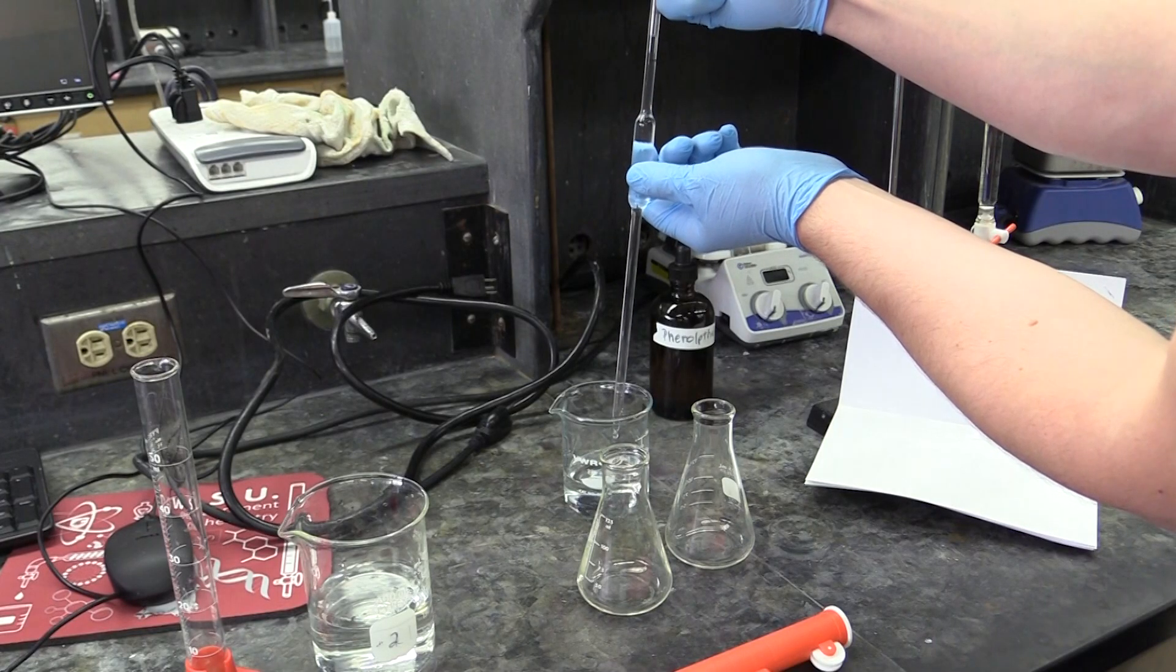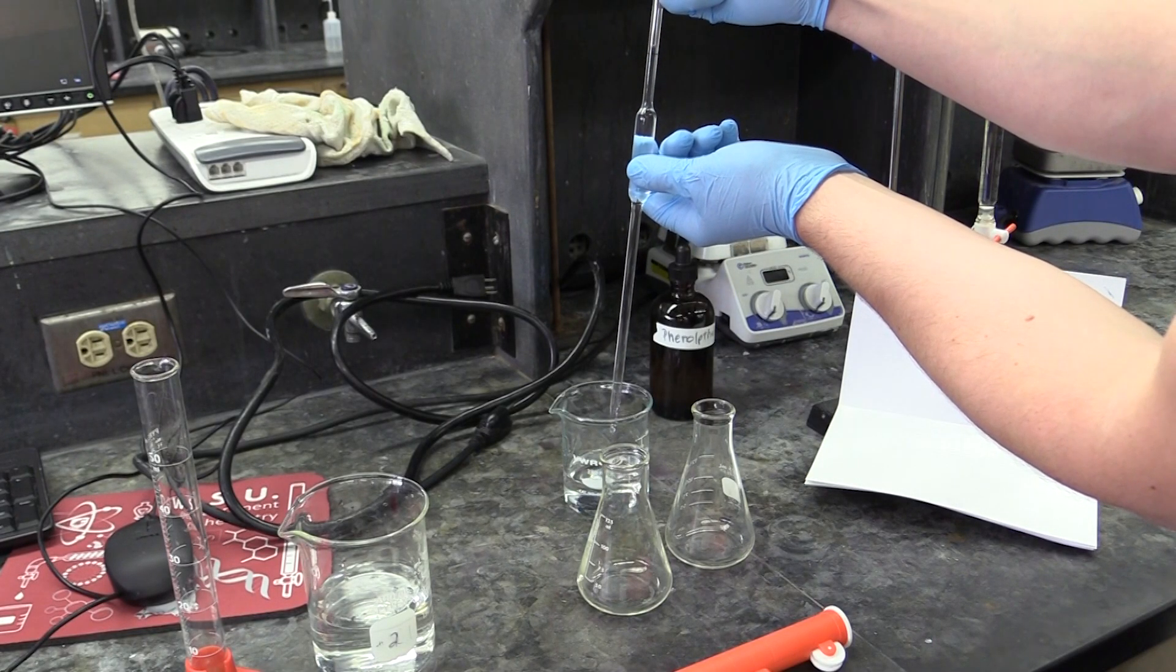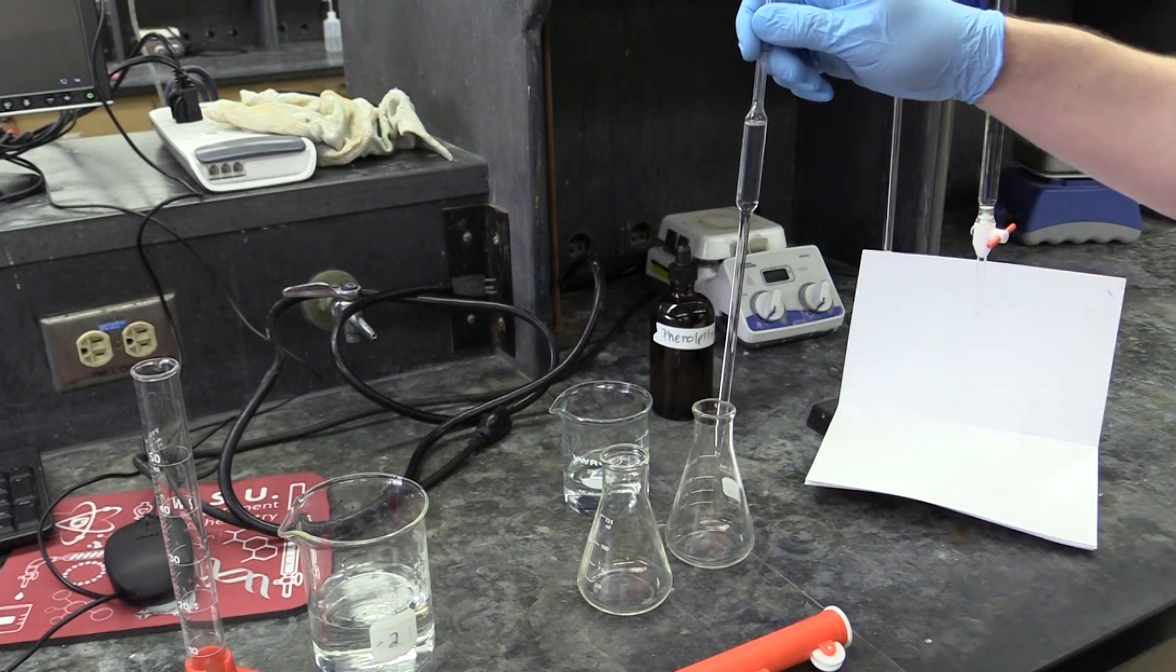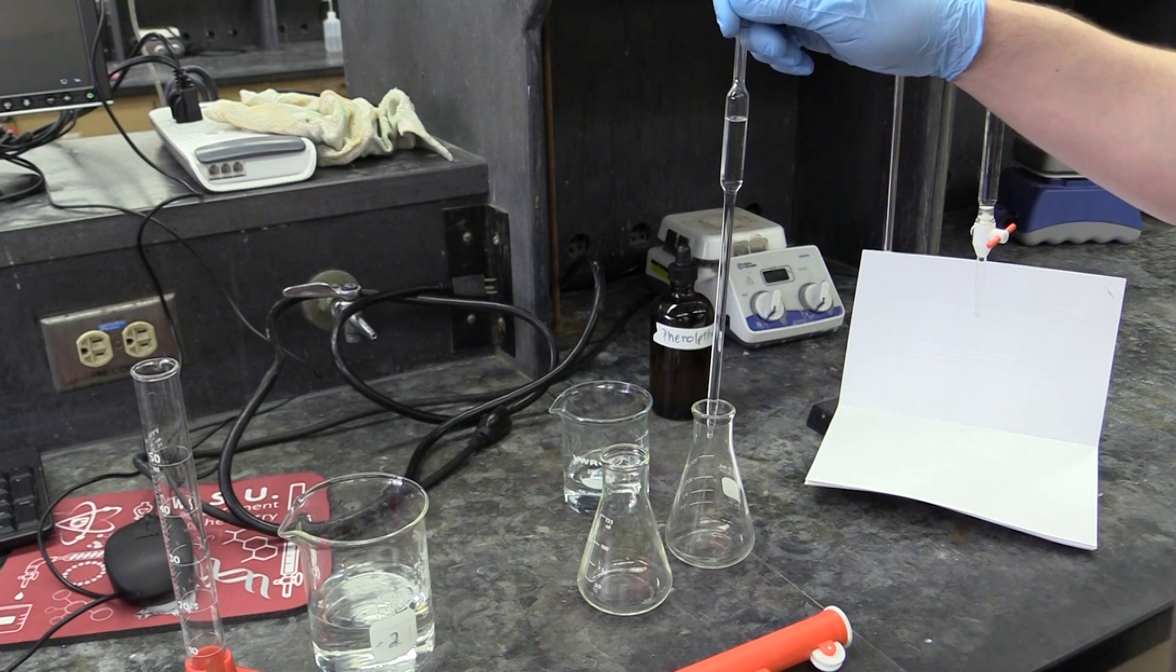Next, you will prep your Erlenmeyer flasks with some of the acid solution you just made. Do this by pipetting one aliquot, that's a fancy term for one pipette's worth, one aliquot of acid into each flask.